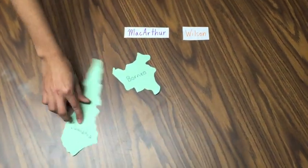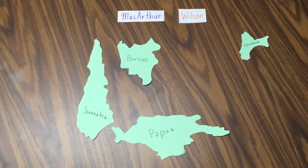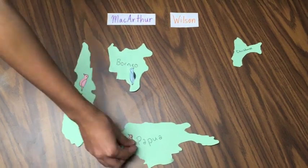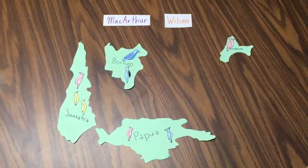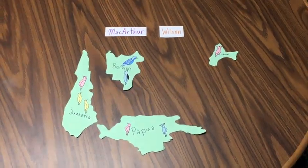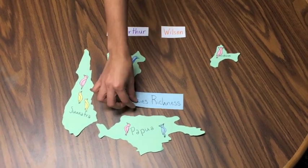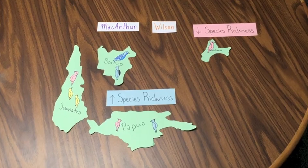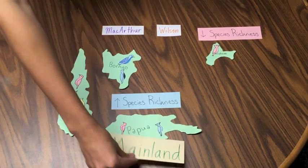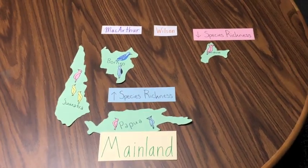MacArthur and Wilson first published the theory based on a study about Pacific birds. They found that large islands such as Sumatra, Borneo, and Papua had about 700 different species of birds present, whereas tiny islands like Christmas Island only had about 10. MacArthur and Wilson labeled Papua as the mainland of their study, and found that islands closer to Papua had greater species richness than islands further away.